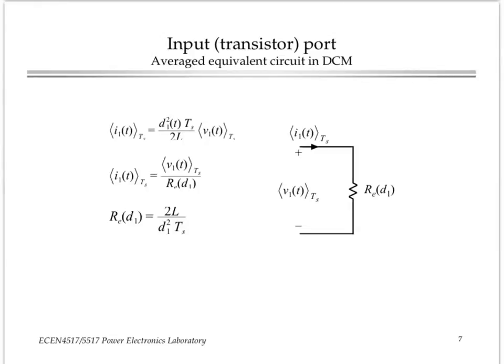Here for port 1, this is what, on average, models the behavior of the transistor in the switch network operating in discontinuous conduction mode. We find that it behaves as a resistor. There is a linear relationship between the average port voltage and the average port current, and that linear relationship is represented by a resistive component, where that resistance is given by 2L over D squared Ts. Don't be confused by D1 here. D1 is the same as the duty cycle driving the switches.